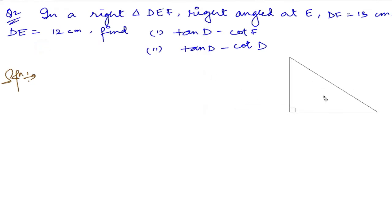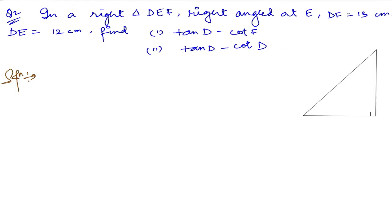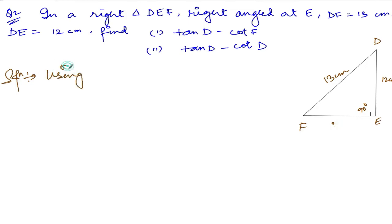Let me draw the right triangle first. Here is our right triangle — let me rotate and label it. The triangle is named DEF, with the right angle at E, so this is 90 degrees. DF is the longer side, that is 13 centimeters. DE is 12 centimeters, and FE we do not know.